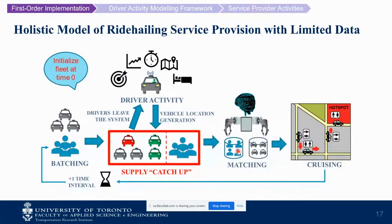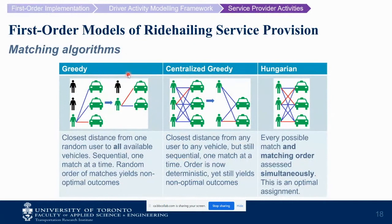On matching algorithms: we tested a greedy algorithm, a centralized greedy algorithm, and the Hungarian algorithm. In greedy matching, we randomly pick a user and find the closest vehicle, remove the matched agents, and repeat. In centralized greedy, we look at all users and vehicles to find the shortest connection, remove agents, and continue — though order still matters. The Hungarian algorithm considers all combinations and all possible orderings, producing a truly optimal outcome at the level of the time interval. We also tested a completely random matching algorithm to establish a very low performance boundary.